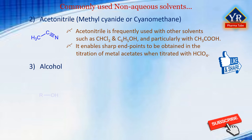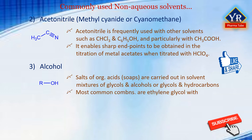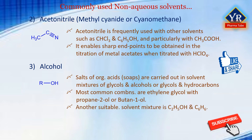3. Alcohols: It has been found that determinations of salts of organic acids, and especially of soaps, are best carried out in solvent mixtures of glycols and alcohols, or of glycols and hydrocarbons. The most common combinations of this type are ethylene glycol (dihydroxyethane) with propan-2-ol or butan-1-ol. These combinations provide admirable solvent power for both the polar and non-polar ends of the molecule. Another suitable solvent system is methanol and benzene.